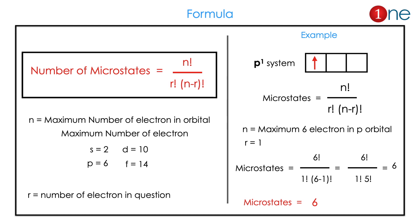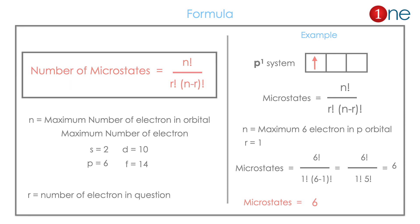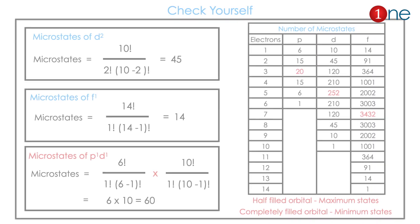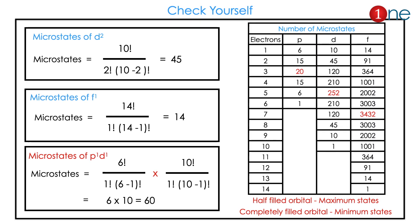Here we see the same example — a p system. The maximum number of electrons is six, and the electron in question is one. If you substitute into the formula, you get six. So the same problem is solved mathematically by that formula. Memorize the formula.